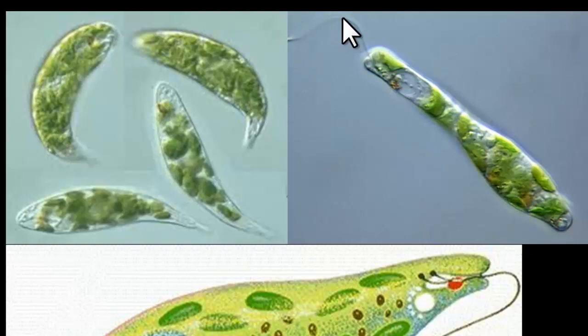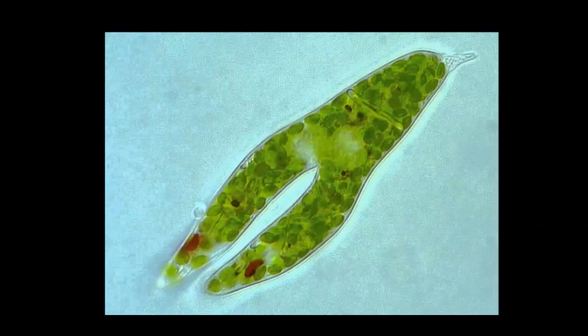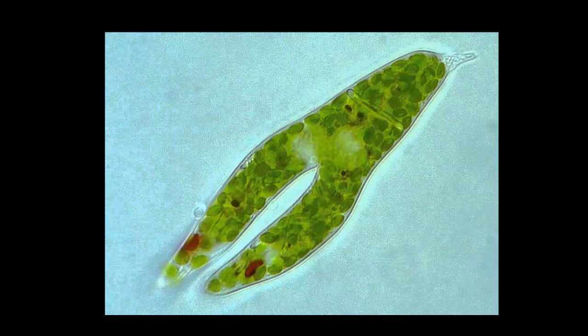A very high-powered microscope would be used to pick up this tail here. But usually, we can just see a bit of a blurring of the water when it's moving. It's reproduced simply by splitting into two. Very simple reproduction. Here's an amazing photograph just showing it reproducing, splitting into two, going from one to two.